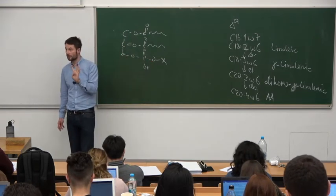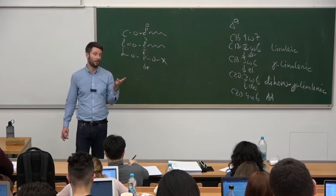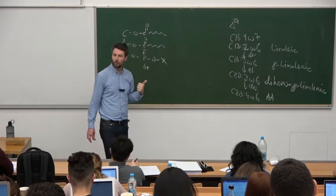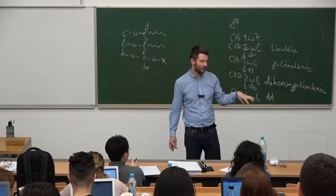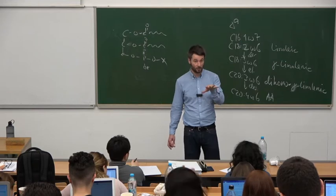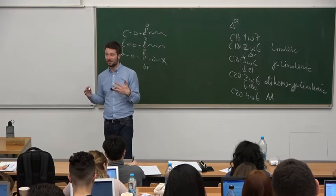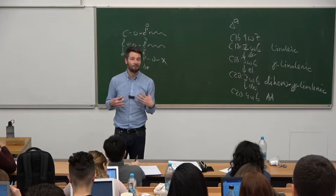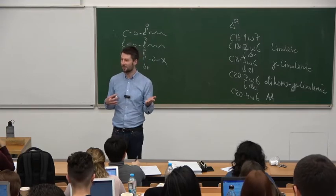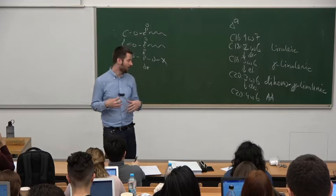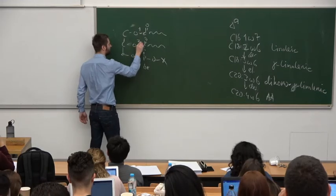Prostaglandins are responsible to a large degree for all the classical signs of inflammation. They cause vasodilation — blood vessels dilate so more blood flows through the area — which makes sense if we want to get white blood cells there for healing or fighting infection. They also mediate pain: prostaglandins themselves usually don't directly cause pain, but they make the area much more sensitive to other painful stimuli by sensitizing nerve endings that carry pain signals.